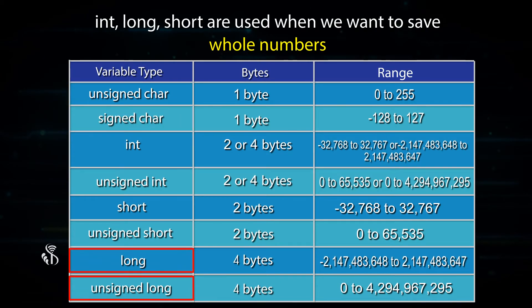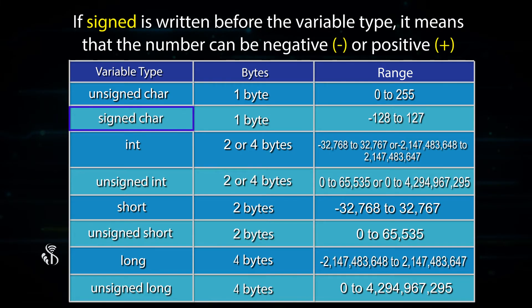Int, long, short are used when we want to save whole numbers. If signed is written before the variable type, it means that the number can be negative or positive.